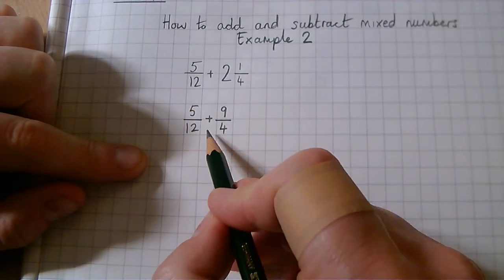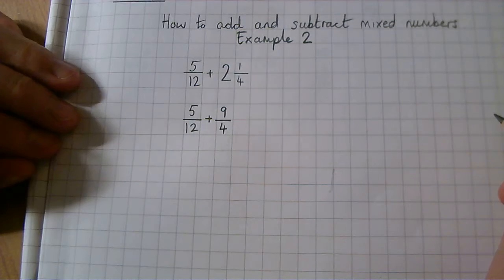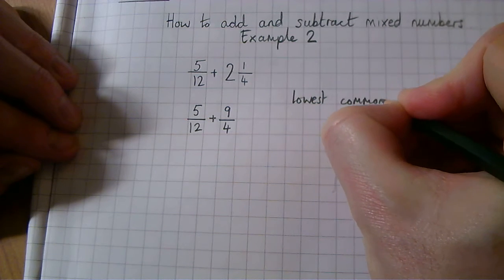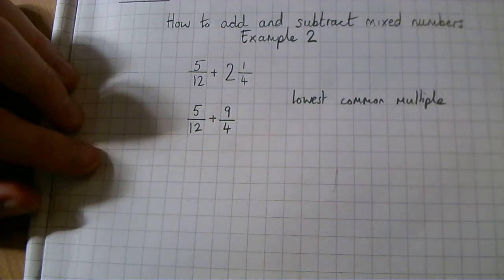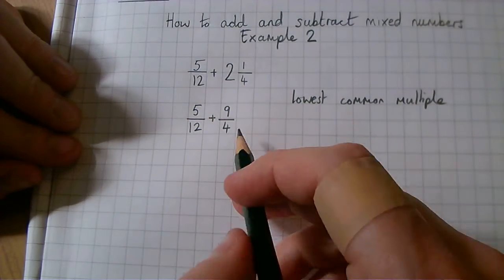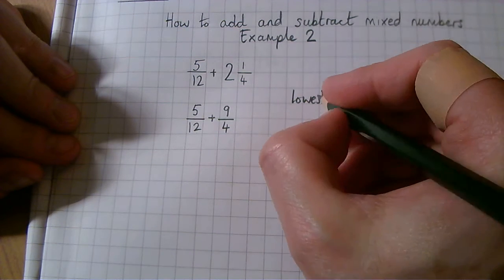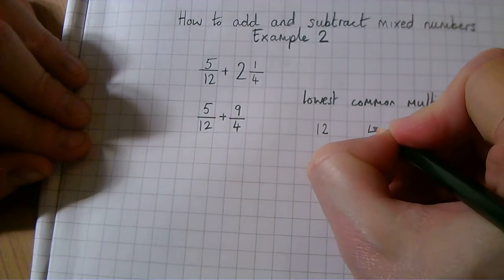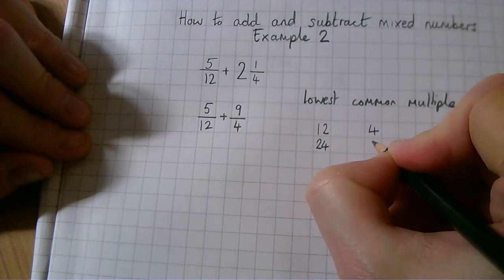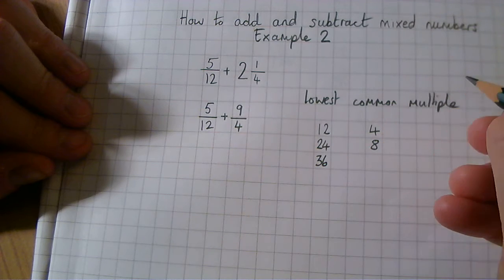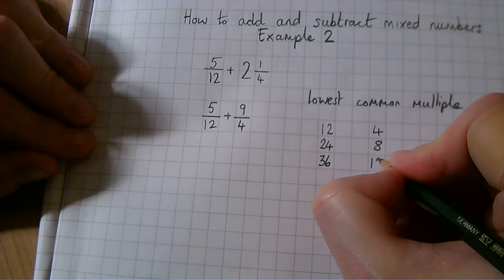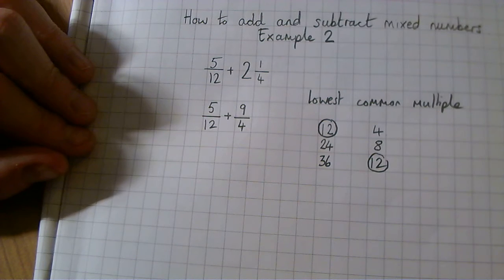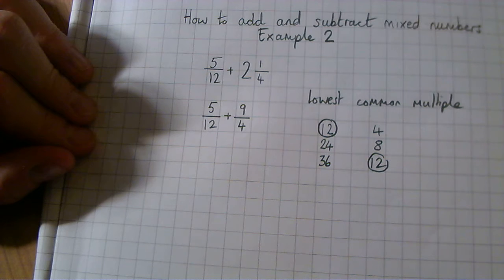Before we can add these fractions we need to make the denominators the same, just like in other examples, so we're going to find the lowest common multiple. We'll write out the multiples of 12 to find the lowest number that is also in the 4 times table. Writing out the multiples one at a time until we find a number common to both — and there we go. 12 is a common multiple of both 4 and 12, and it's the lowest one, so we've found the lowest common multiple.